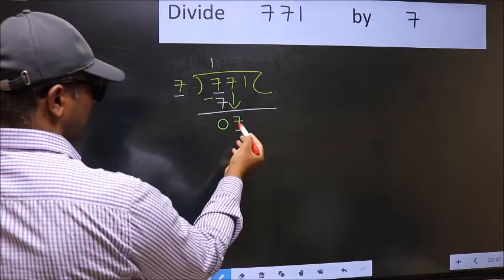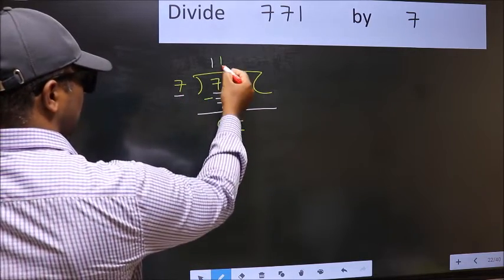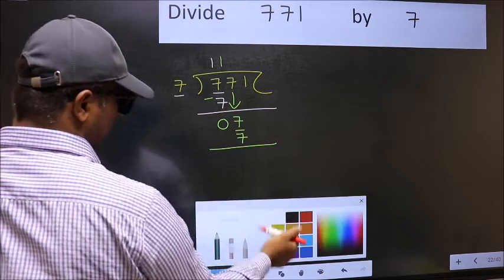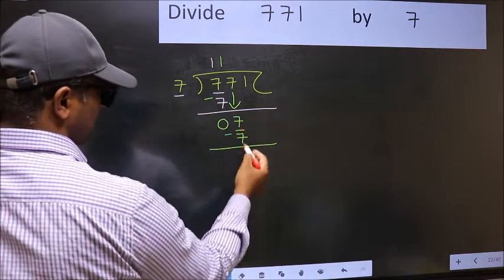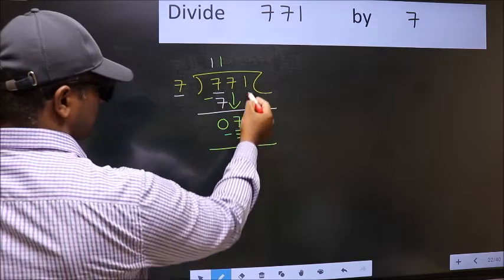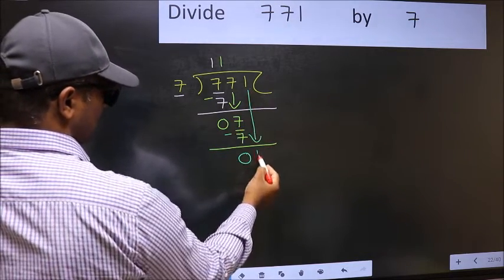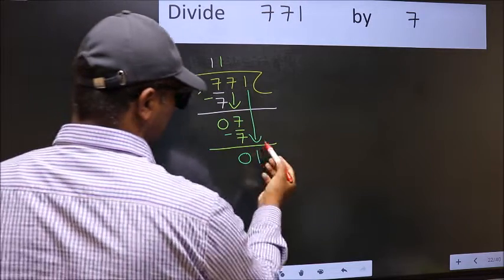Now 7. When do we get 7 in the 7 table? 7 once is 7. Now you should subtract. 7 minus 7 is 0. After this, bring down the beside number. So 1 down. After this step,